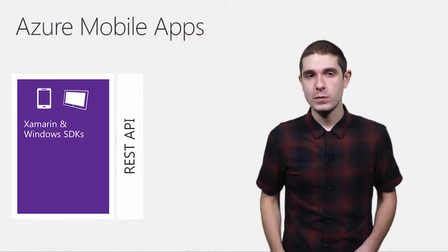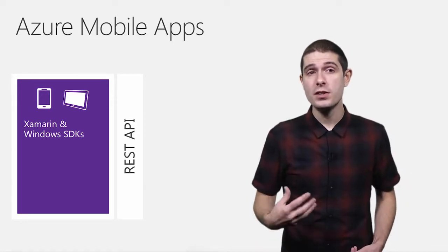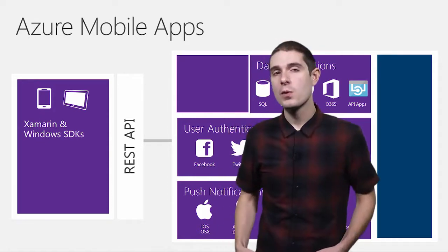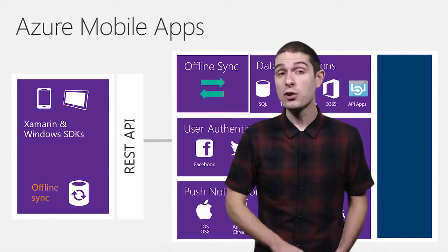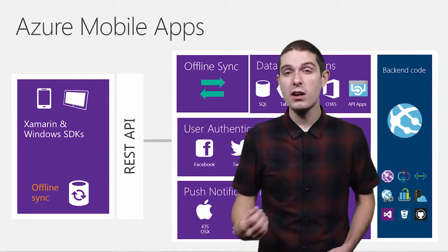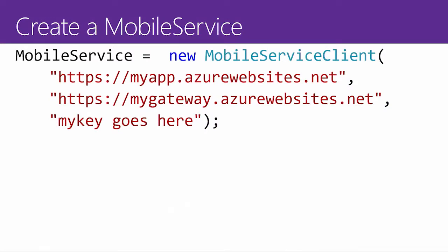That's where Azure Mobile Apps comes in. On one side you have your iOS, Android, and Windows applications with the Xamarin and Windows SDKs installed. This gives you a nice REST API to access SQL databases, user authentication with Facebook, Google, or Azure Active Directory, and push notifications. With Azure Mobile Apps you get full online and offline synchronization handled automatically, plus full access to your own custom backend code.